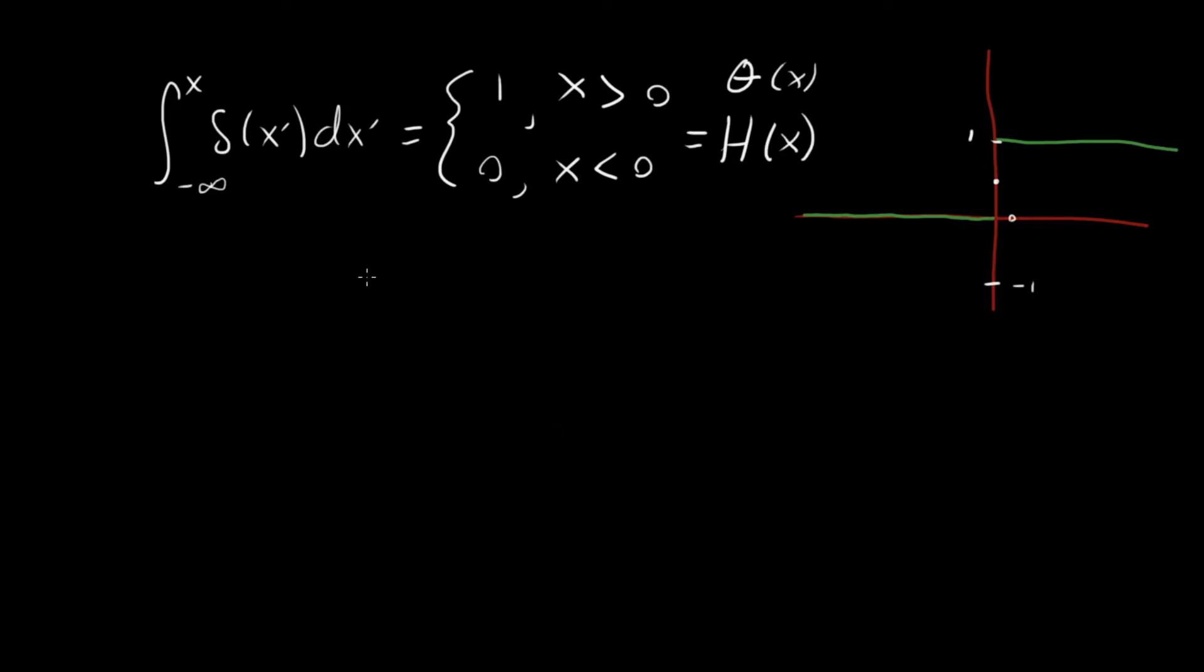So really all that I'm doing here is just showing you that the integral minus infinity to x of the delta function is going to be this Heaviside or theta function where it's 0 up to 0, 1 otherwise.